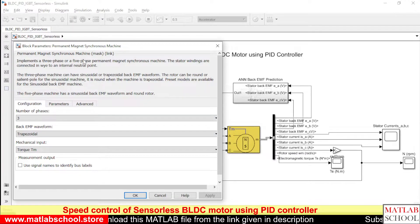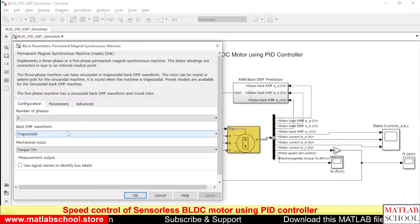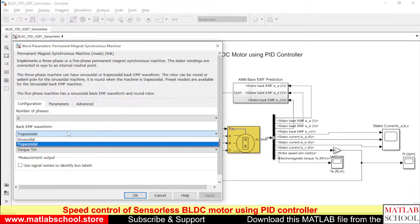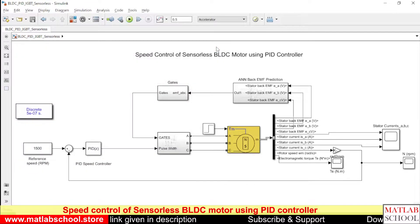We will be doing the BLDC motor simulation just by using the permanent magnet synchronous machine block. The only difference is here we will be using the trapezoidal back EMF. If you put sinusoidal back EMF, that will become permanent magnet synchronous machine. If you put trapezoidal back EMF here, the machine will become a BLDC motor. That's the only difference between PMSM and BLDC motor.